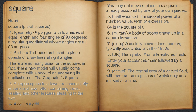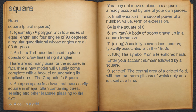3. An open space in a town, not necessarily square in shape, often containing trees, seating and other features pleasing to the eye. 4. A cell in a grid. For example, you may not move a piece to a square already occupied by one of your own pieces.